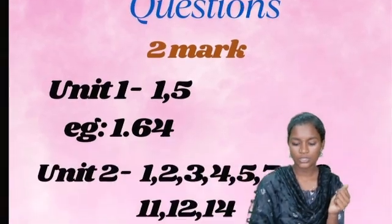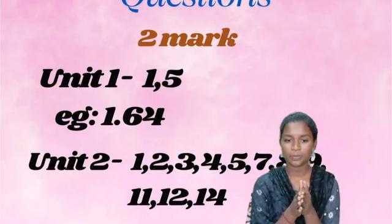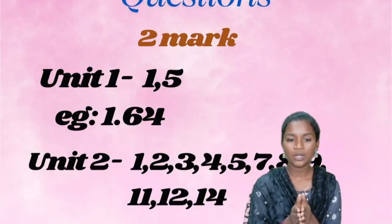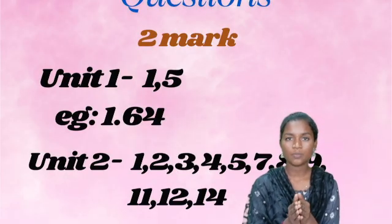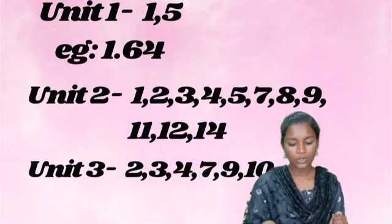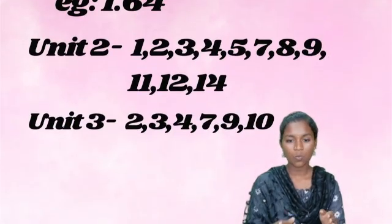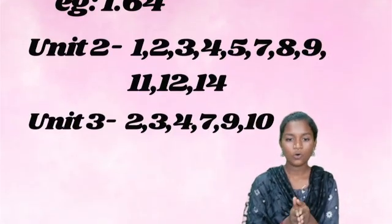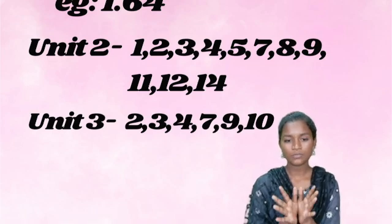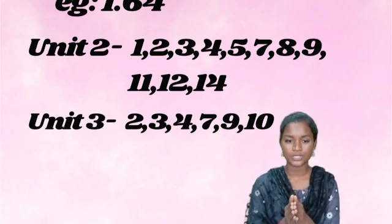For the first two marks, we need to talk about the important part. Unit 1 is very important — questions 1 and 5 are very important, and in the book, page 1.64 is very important. In unit 2, questions 1, 2, 3, 4, 5, 7, 8, 9, 11, 12, and 14 are very important questions.